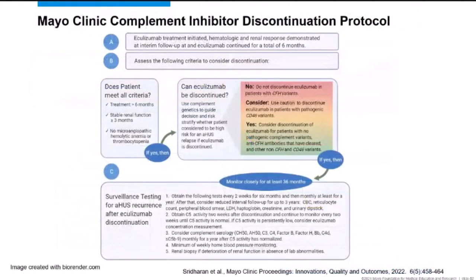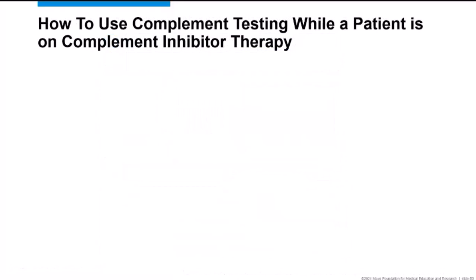At our institution, we consider C5 inhibitor discontinuation in patients with complement-mediated TMA who have been in hematologic and renal remission for at least six months. We review their complement genetic risk profile: if they do not have a high-risk variant, we consider discontinuation; if they do, we counsel the patient that discontinuation may be too risky. Those who discontinue are monitored closely with frequent lab and clinical follow-up.